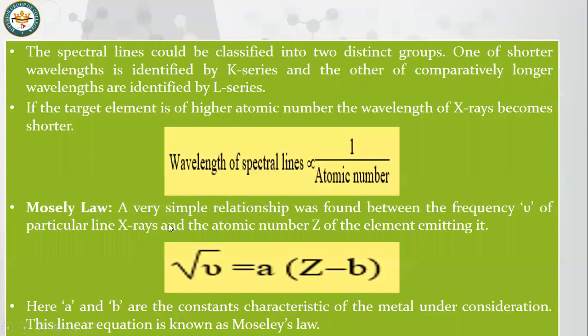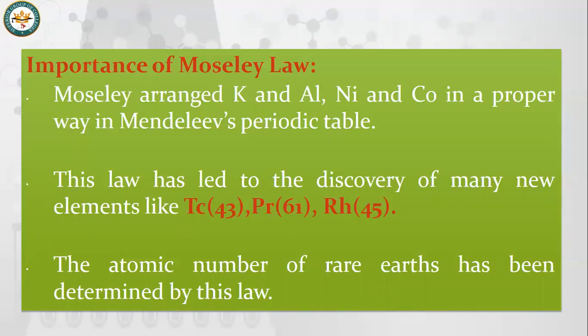Based on this relationship, Moseley gave a law called Moseley's Law. Moseley's law defines the relationship between frequency and atomic number in X-rays. The formula is: square root of V equals A into (Z minus B), where A and B are constants that depend on the conditions of the metal. The importance of Moseley's law is that it helped discover new elements and arrange the periodic table correctly — for example, potassium, nickel, cobalt. New elements and rare earth metals were also discovered and their atomic numbers determined using this law.